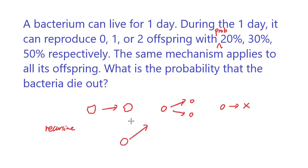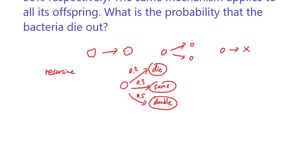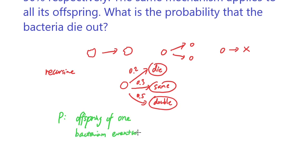Basically, a bacterium has a 20% chance of dying out immediately, a 30% chance of maintaining the same population, and a 50% chance of doubling to become two bacteria. To represent this probability, let's figure out the recursive relationship. Let p be the probability that the offspring of one bacterium eventually die out — starting with just one bacterium, the probability that it eventually dies out is p.